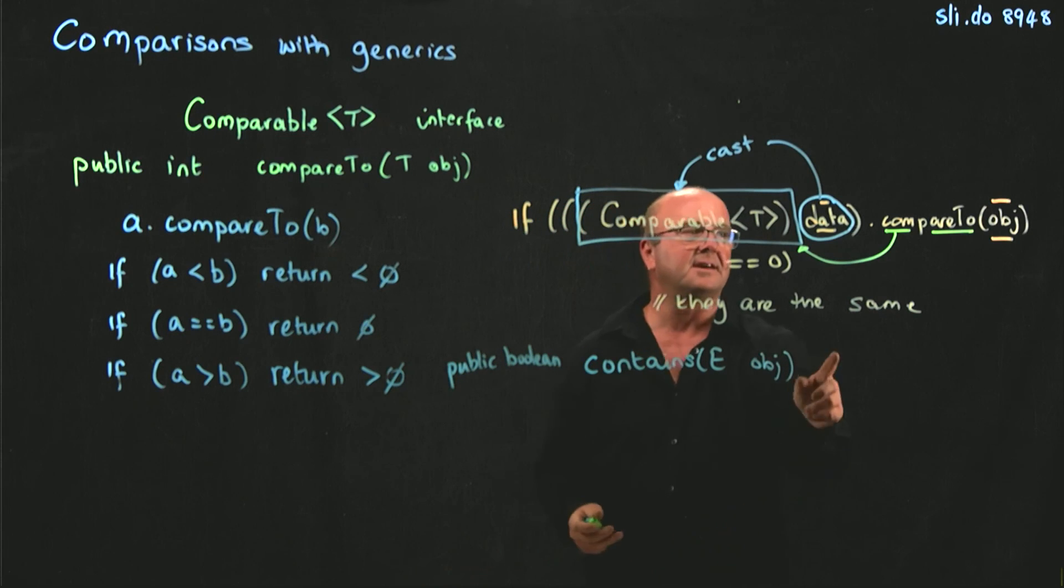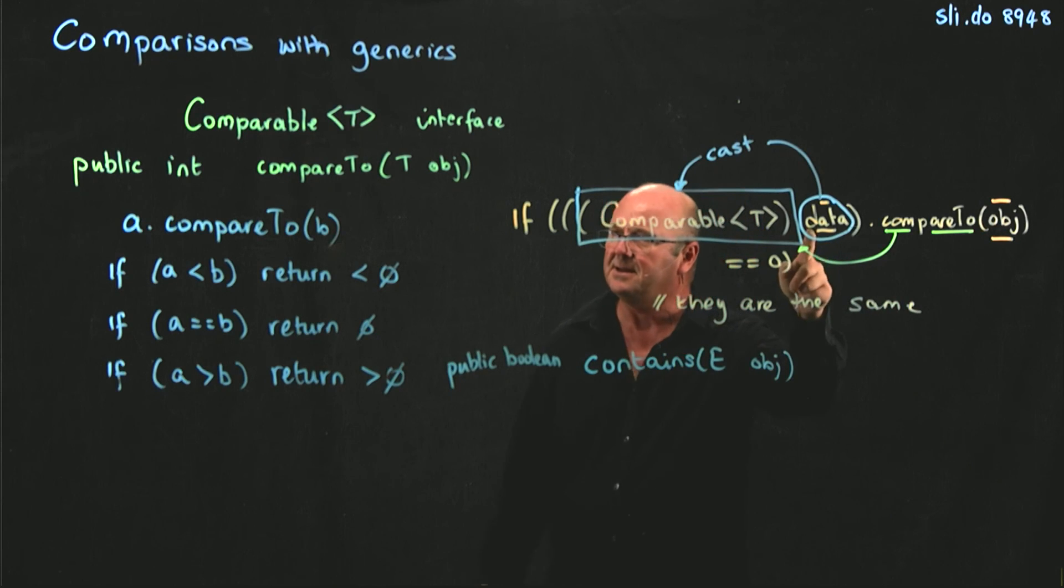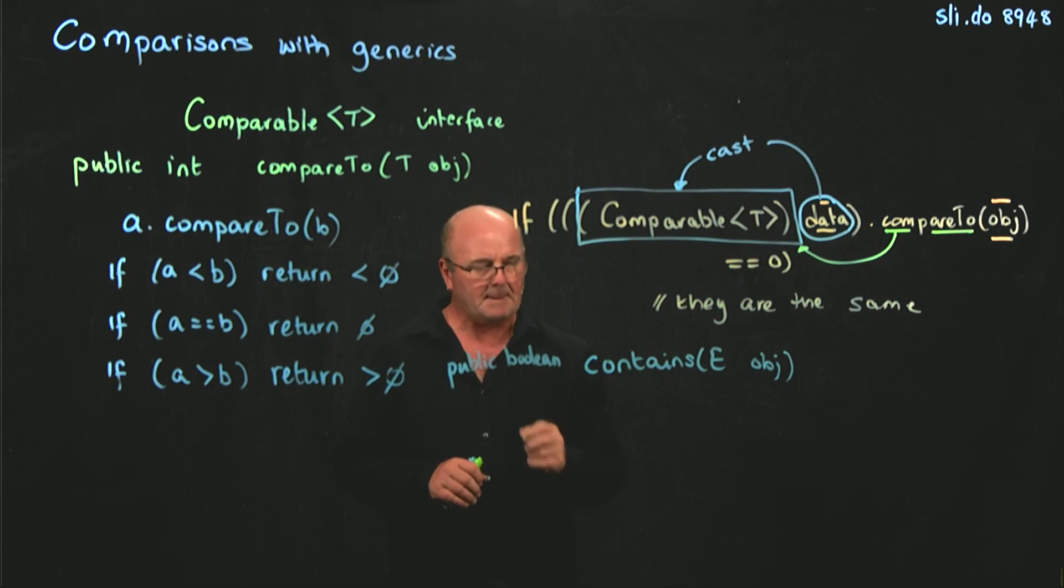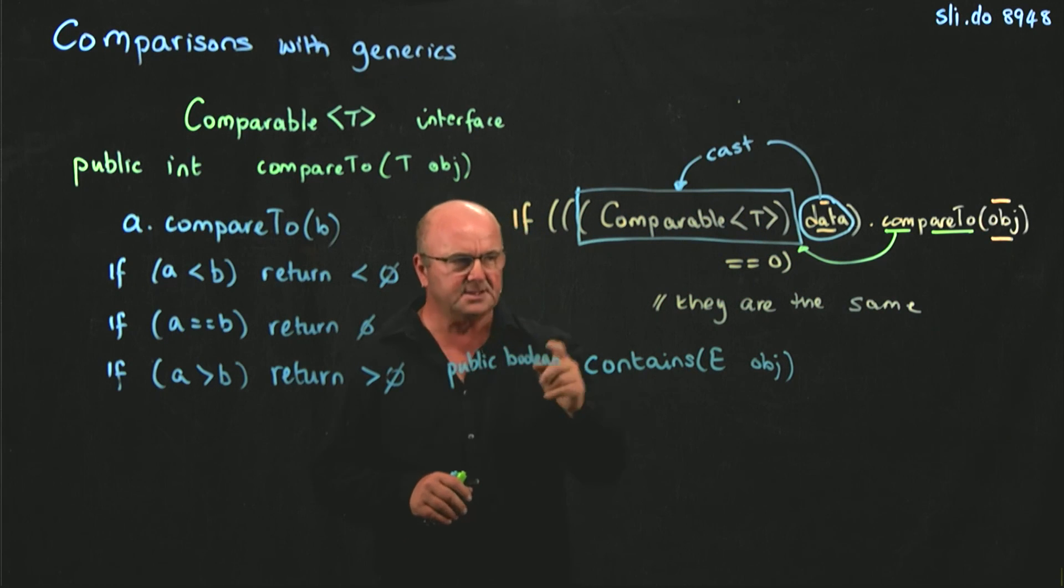So, our contains method in our linked list is going to, this is the object that we're comparing to, this will be our data in our node in our linked list, and we'll talk more about that on Tuesday. And so, if it's zero, then we have it.